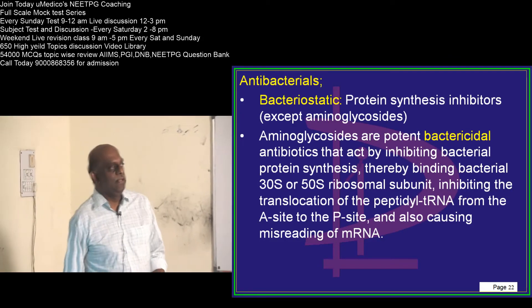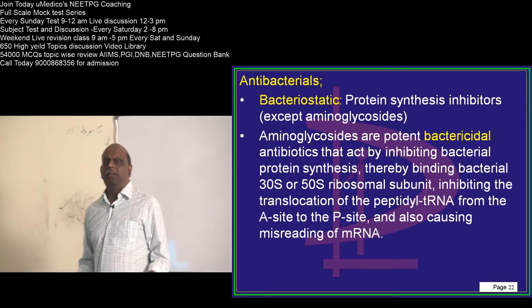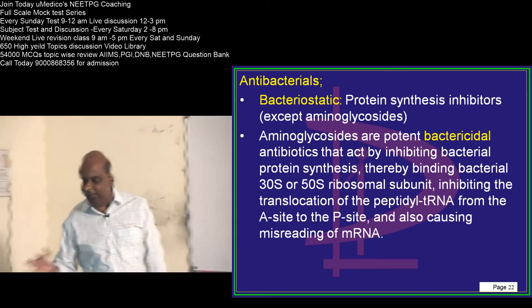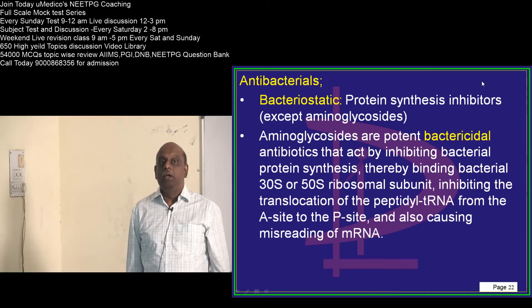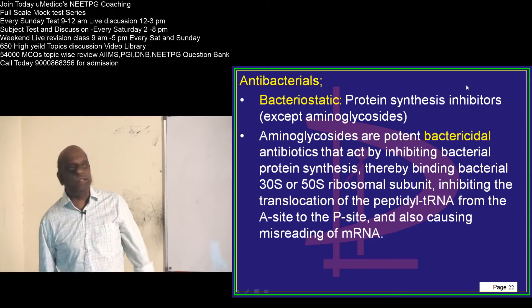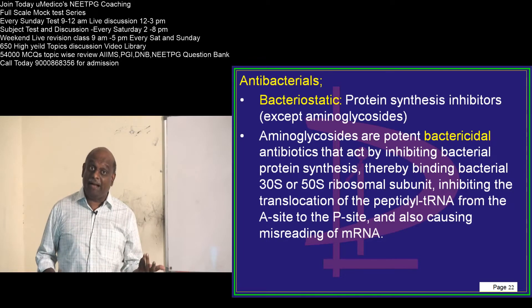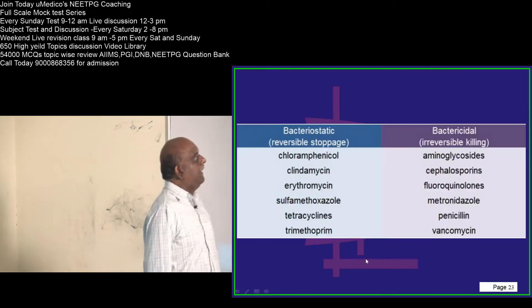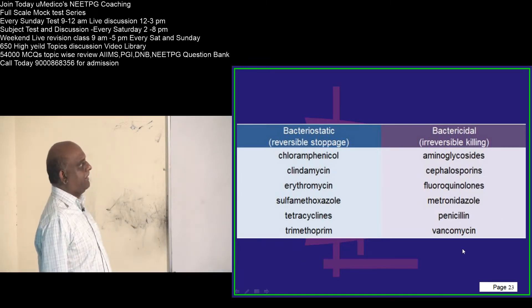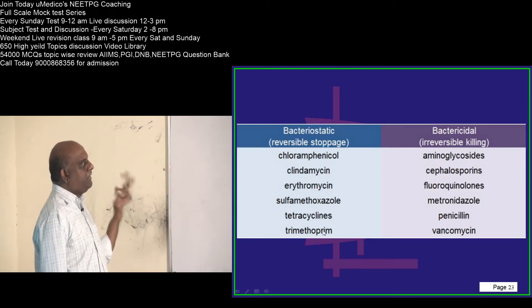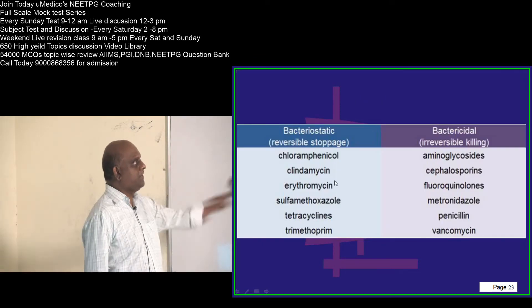Now antibacterials: all antibacterial drugs are divided into bacteriostatic and bactericidal. Protein synthesis inhibitors are generally bacteriostatic — with one exception: aminoglycosides also block protein synthesis but are still bactericidal. Classical examples of bacteriostatic drugs: chloramphenicol, clindamycin, erythromycin, sulfamethoxazole, tetracycline, trimethoprim, etc.